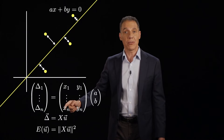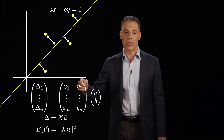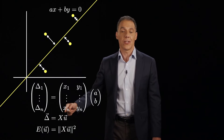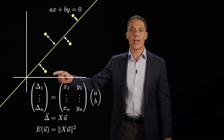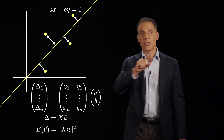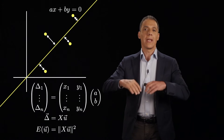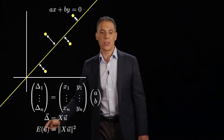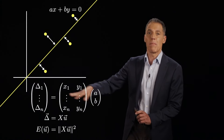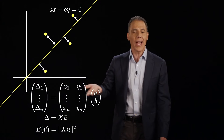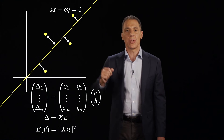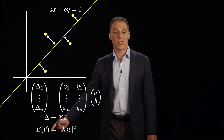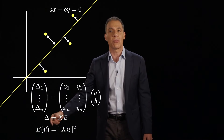So delta equals the matrix X — which has the X's and Y's, not X's and 1's — times the unknown vector U containing A and B. The quadratic error function E(U) is the sum of the squares of the deltas: take that delta vector, transpose it, and multiply it by itself. That's the same as taking the vector norm and squaring it — the same thing we did with least squares. I have a quadratic error function in U equal to the vector norm of XU squared. The only difference is there's no minus Y term, because I've parameterized the line differently to compute perpendicular distances. This is a paraboloid in our two-parameter case, so let's compute some derivatives.